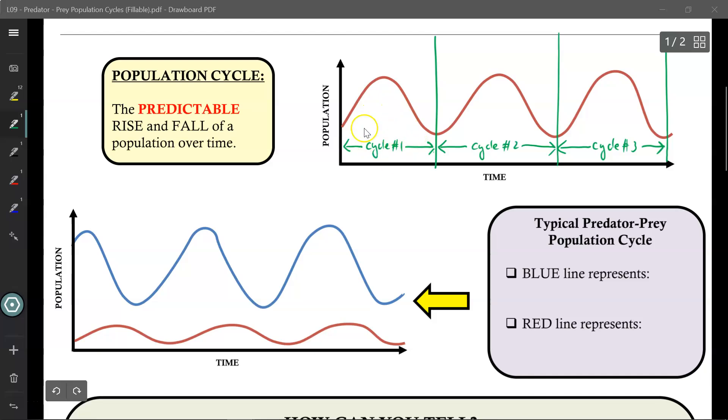This would be the first cycle from this time period to this time period. Then we see the pattern restart again, starting to rise—this would be the second cycle. Once it falls back down and starts to rise again, this is the beginning of the third cycle. The end of each cycle is when the population decreases to the lowest it can get, and the start of each cycle is when it begins to rise back up.